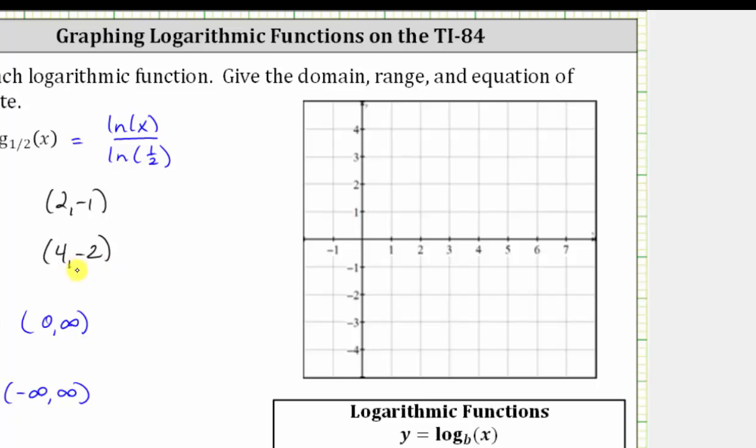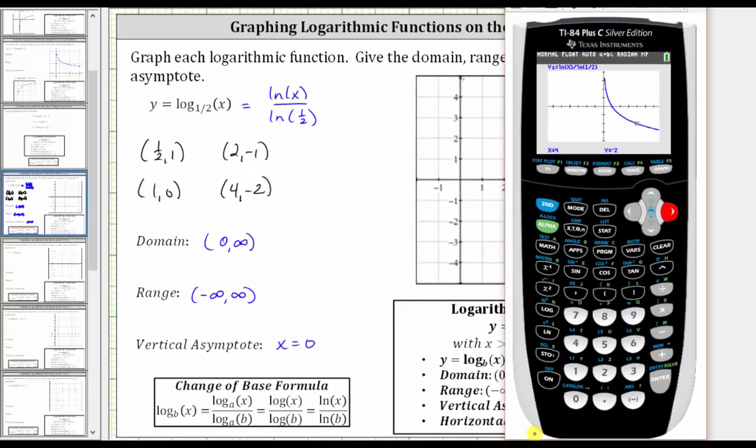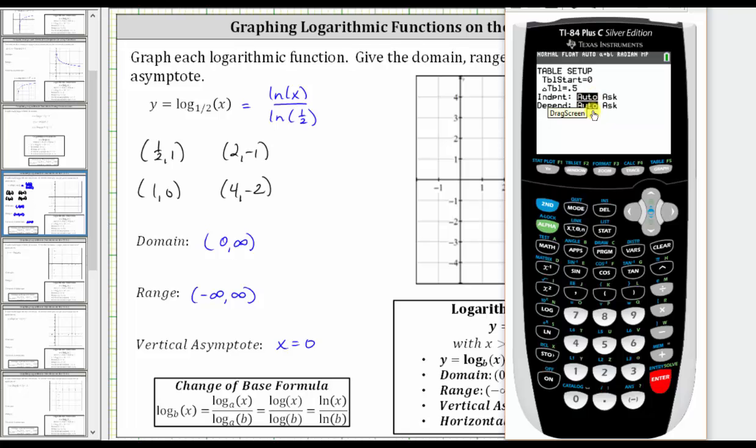Another way to find these convenient points would be to use the table of values. Let's also go over that. Let's first press second window for the table set. Right now the table is going to start at 4.5, let's start at 0, enter. The change in the table is by halves or 0.5, which is fine. We want both the independent and dependent variables to be on automatic, which they are.